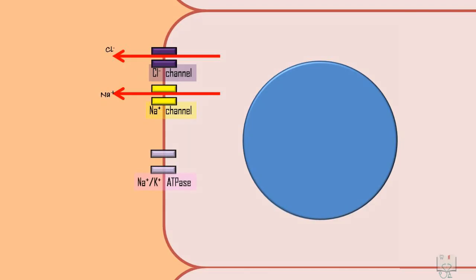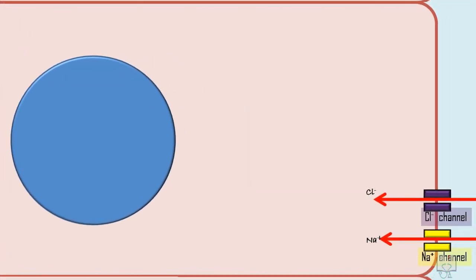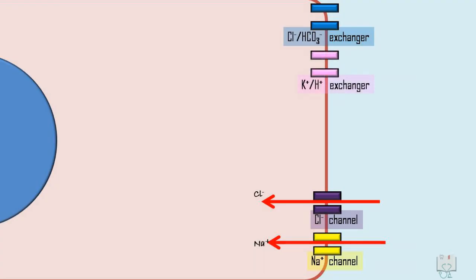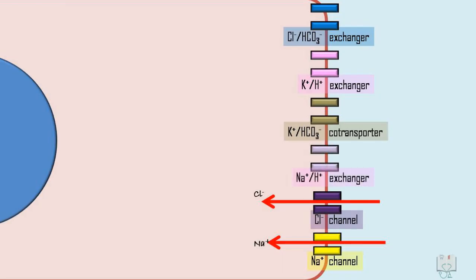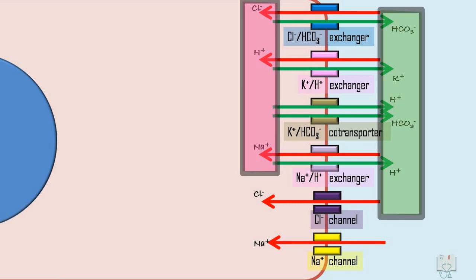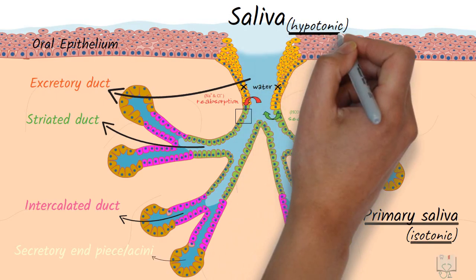The sodium-potassium ATPase channel present in the basal membrane absorbs sodium and secretes potassium ions. In the luminal membrane, a chloride-bicarbonate exchanger, potassium-hydrogen exchanger, potassium-bicarbonate co-transporter, and sodium-hydrogen exchanger are present — all working for the absorption of sodium and chloride and secretion of potassium and bicarbonate — thus making the final saliva hypotonic.